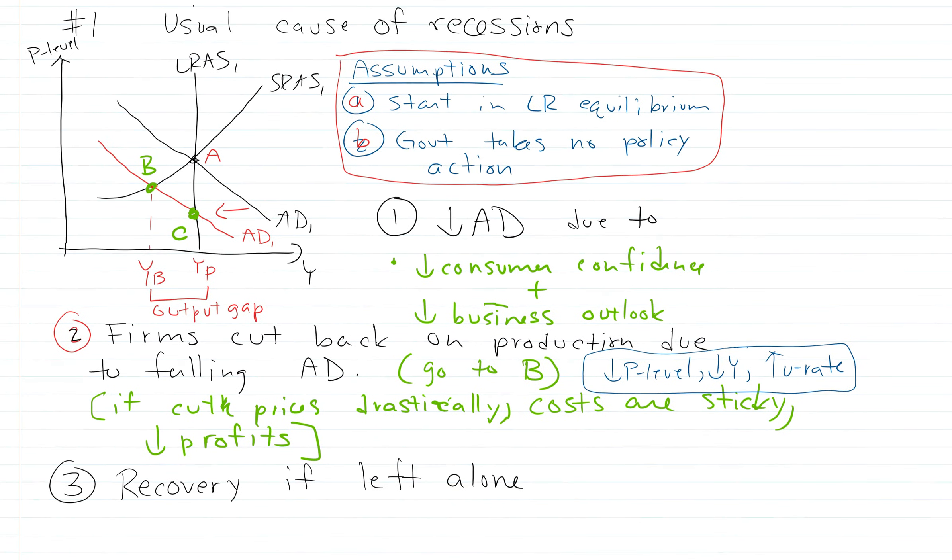Economists don't think so. Most economists think that there'll be recovery if the economy is left alone. So if the economy is left alone, there'll be recovery. Eventually, there's unemployment, there's a lot of unused resources. So eventually the wages, rents, and other costs will fall. And then they'll also lower the price level. So we'll see an increase in the short-run aggregate supply as these costs have fallen.